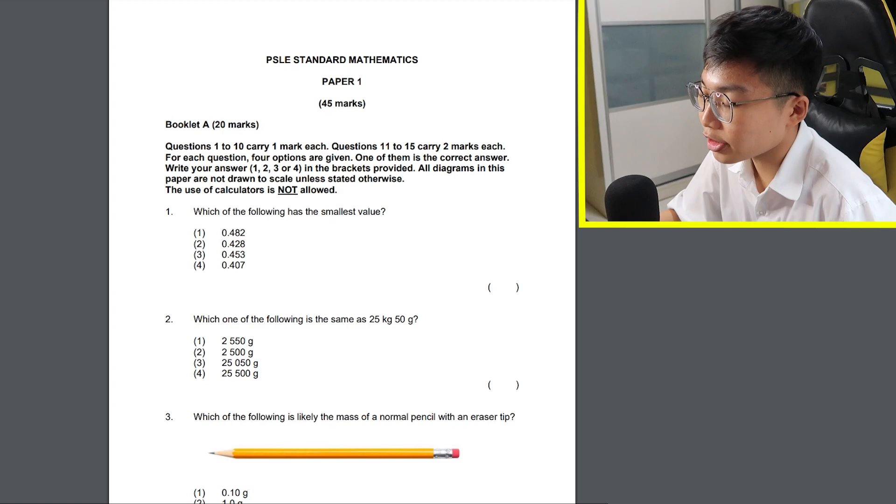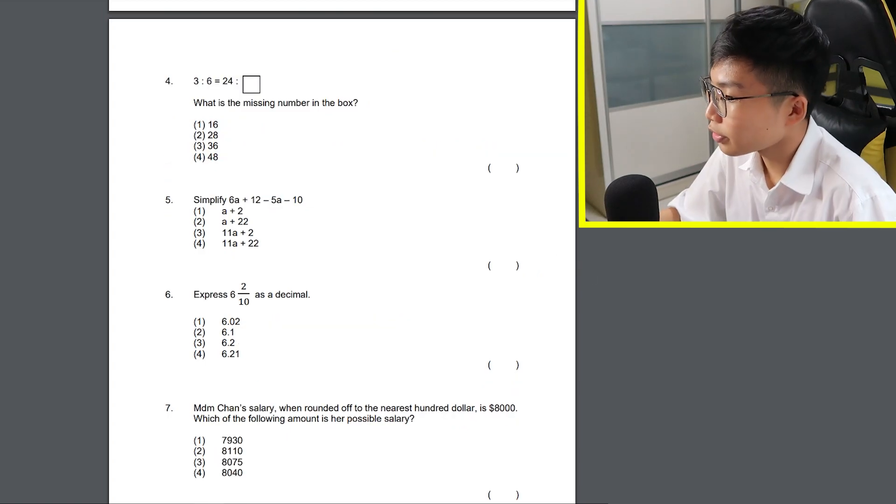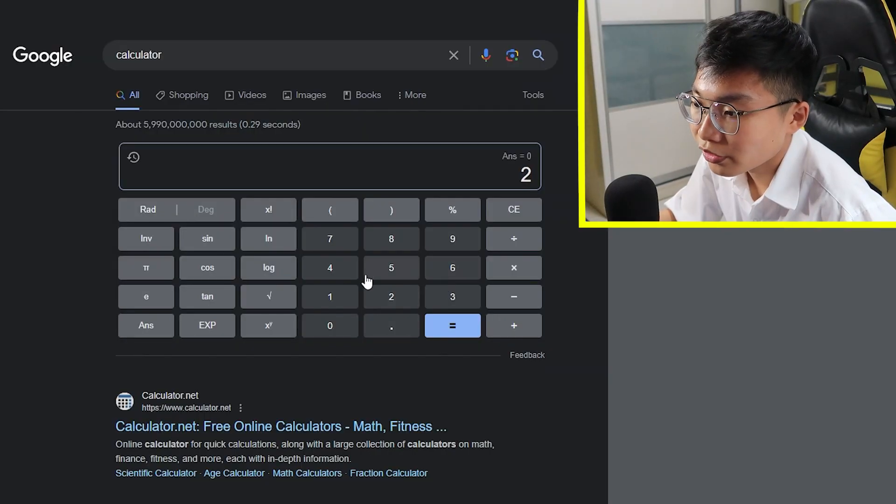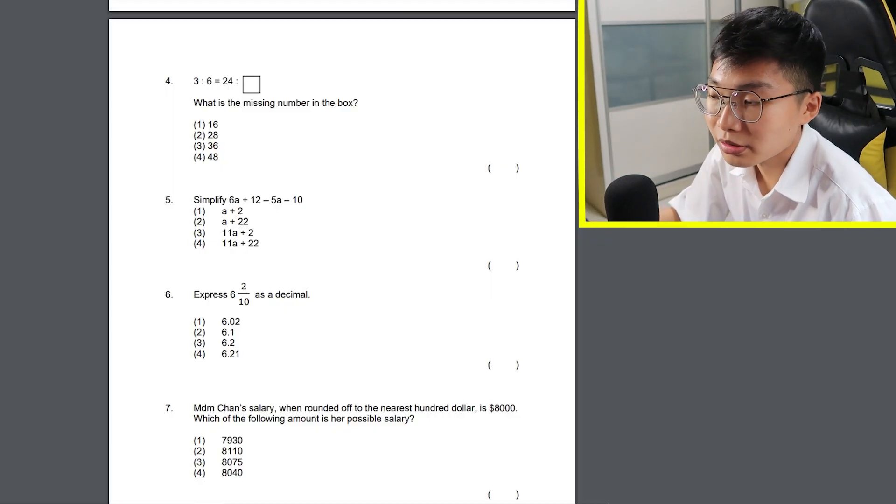Question 1. Which of the following has the smallest value? Oh, it's actually not as bad as I thought it would be. Number 4 of course. Question 4. What is the missing number in the box? Is it really that easy? Oh yeah, I can use calculator right? So 24 divided by 3 is 8. Then after that, 8 multiplied by 6. 48. Number 4.